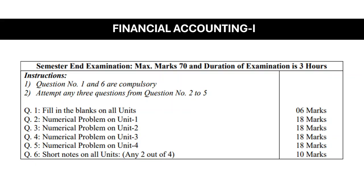Now, these 6 questions — what is their pattern and how many marks are given for each question? First of all, Question No. 1: fill in the blanks covering all units, and those are for 6 marks. Fill in the blanks will be asked on all units of the Financial Accounting 1 syllabus. There are a total of 4 units in the syllabus, and these fill in the blanks will carry 6 marks.